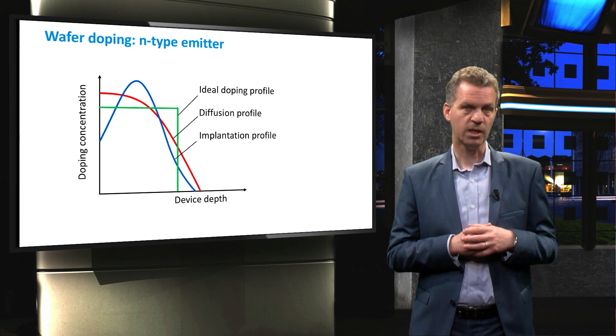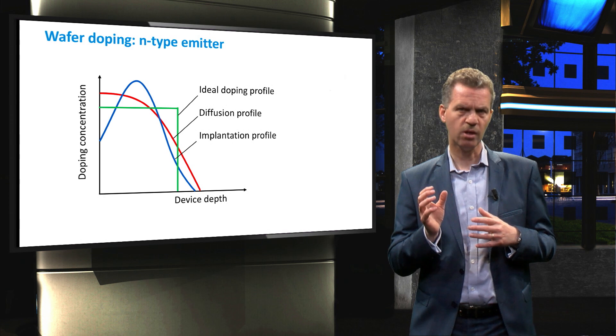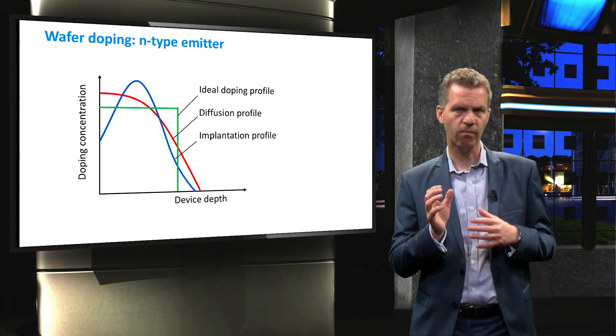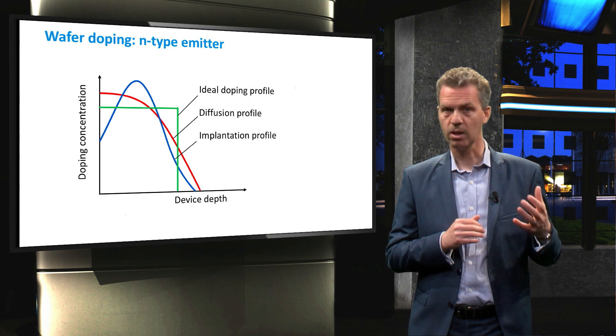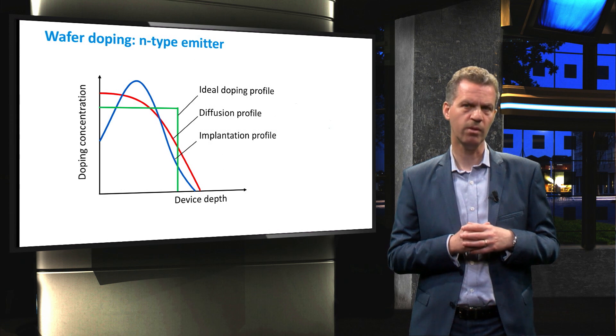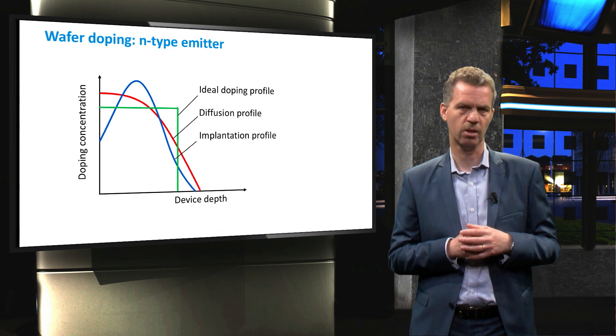With ion implantation, a more precise control of the doping profile and dose for the emitter layer can be obtained. This method, however, requires expensive equipment, which has only been available for the last decade or so.